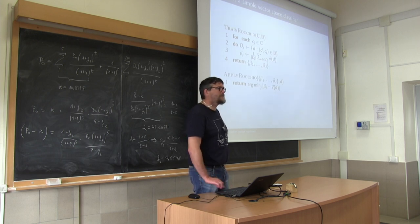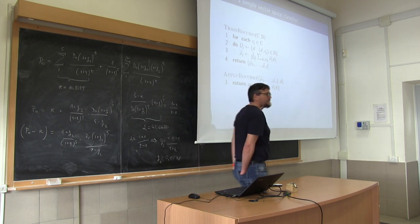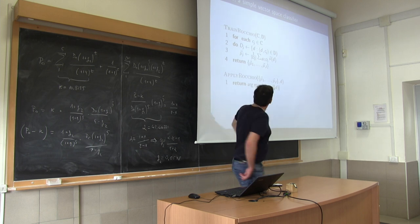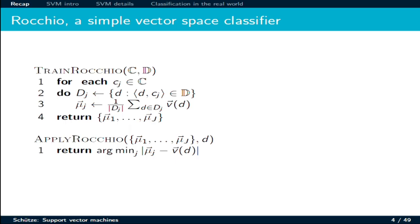We saw how to apply Rocchio. What is the idea of Rocchio? To compute the centroid. The centroid is a prototype for the class. The next question is to see how much the new point you want to classify is close to which centroids, and assign the class on the basis of this computation.